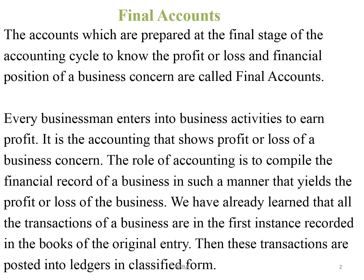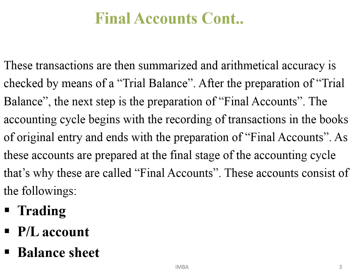All the transactions of a business are in the first instance recorded in the books of original entry. Then these transactions are posted into ledgers in classified form. These transactions are then summarized and mathematical accuracy is checked by means of a trial balance — that is, we prepare the trial balance to check the mathematical accuracy of the journal and ledger. The accounting cycle begins with the recording of transactions in the books of original entry and ends with the preparation of final accounts.